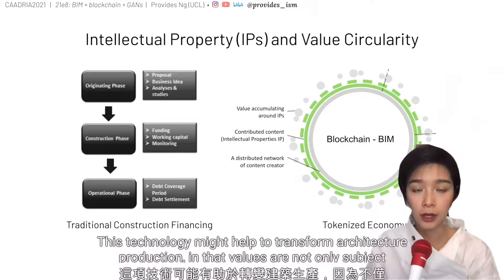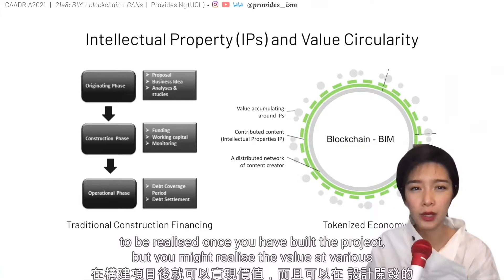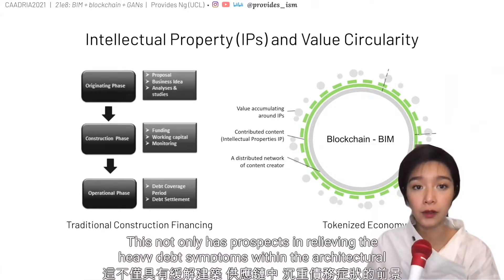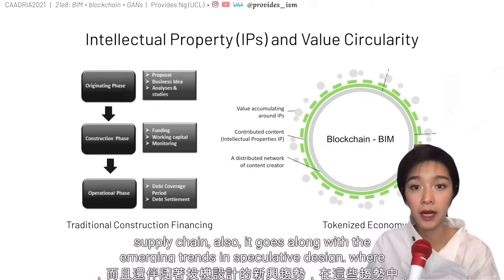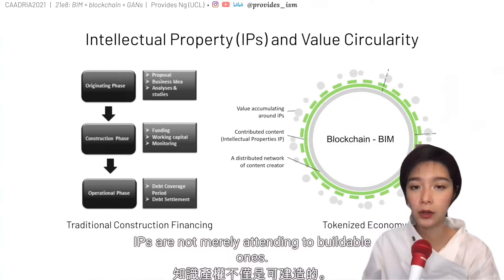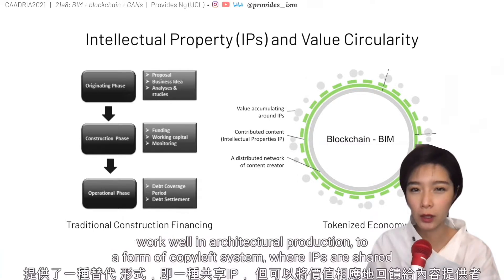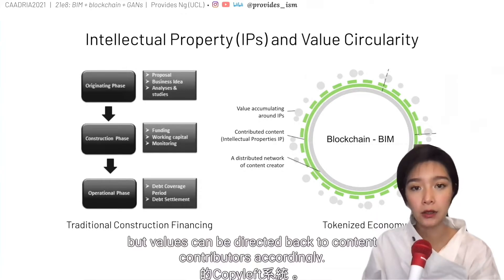This technology might help to transform architectural production in that values are not only subject to be realized once you have finished the project, but you might realize the value at various stages of design development. This not only has prospects in relieving the heavy debt symptoms within the architectural supply chain, but also goes along with emerging trends in speculative design. In short, this provides alternatives to conventional copyright systems — which don't really work well in architectural production — to a form of copy-left system, where IPs are shared but values can be directed back to content contributors accordingly.